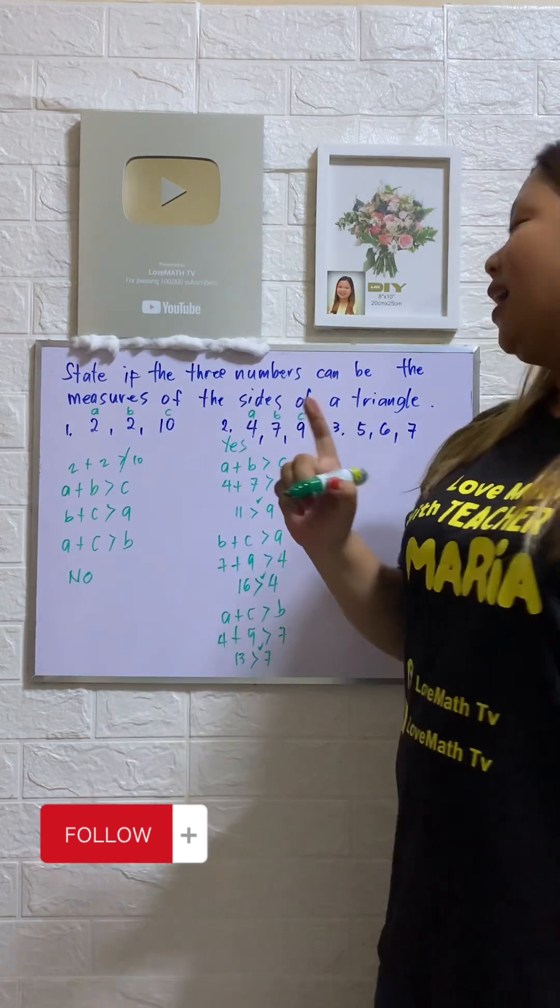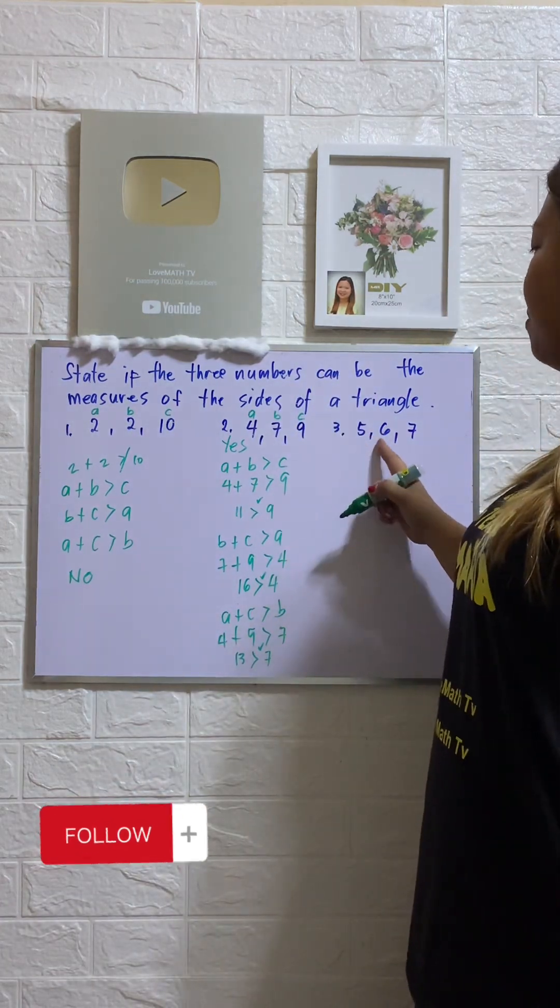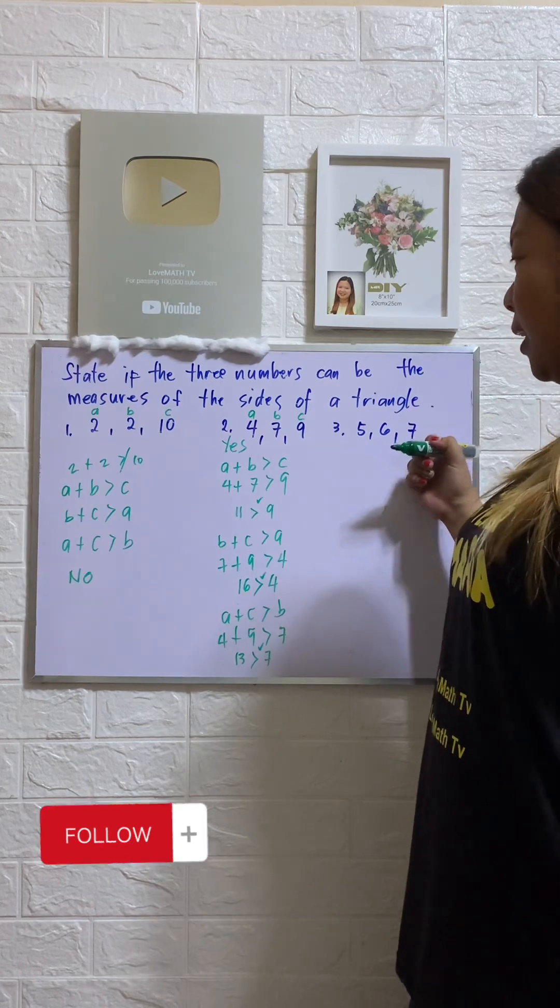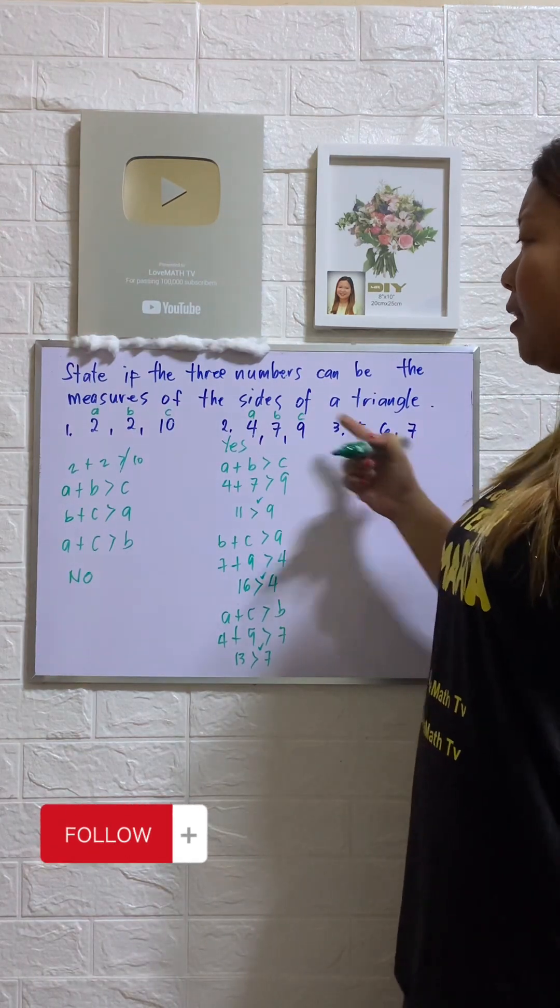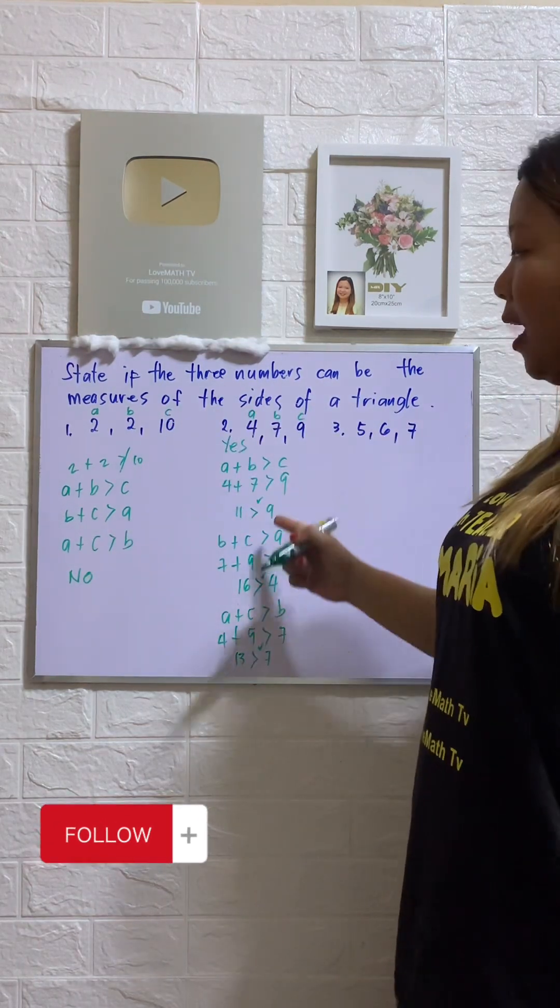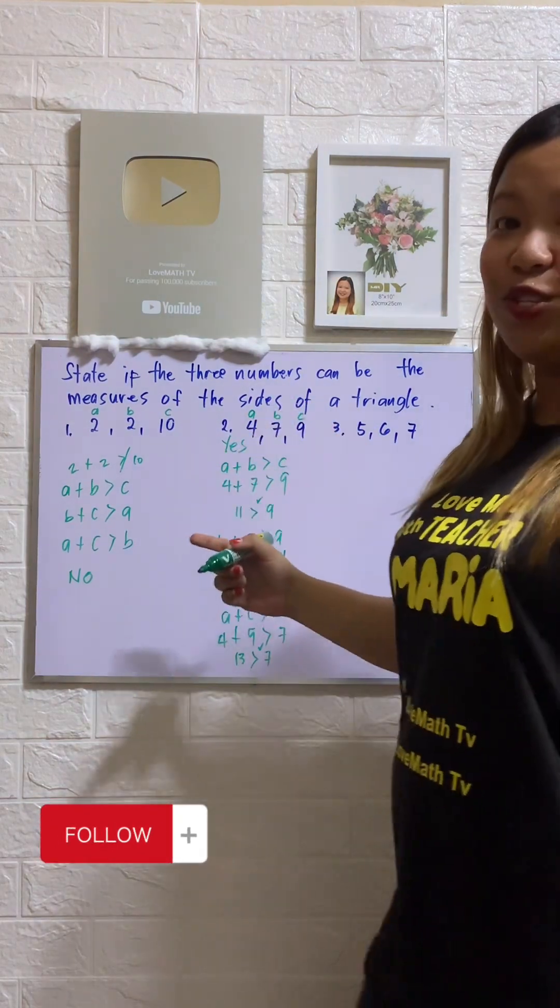Now, for number 3, we have 5, 6, 7. Try to check if this can be the measures of the sides of the triangle by applying the following conditions.